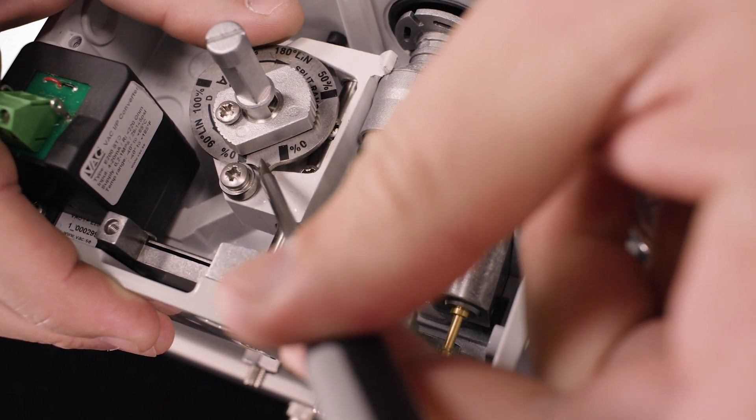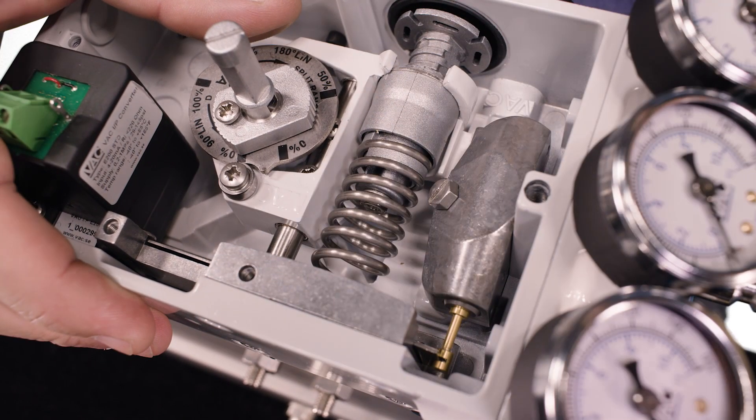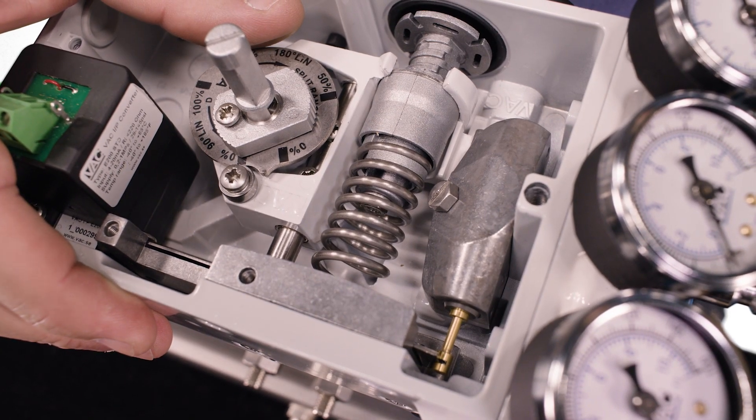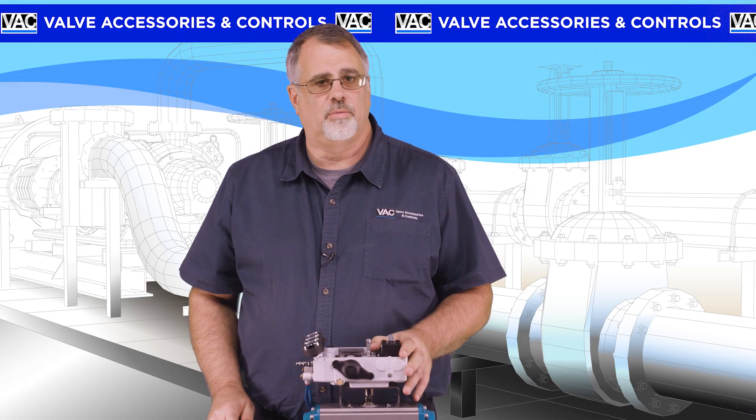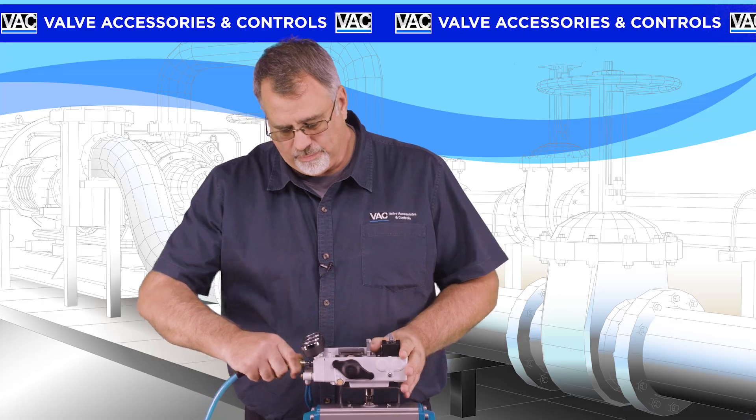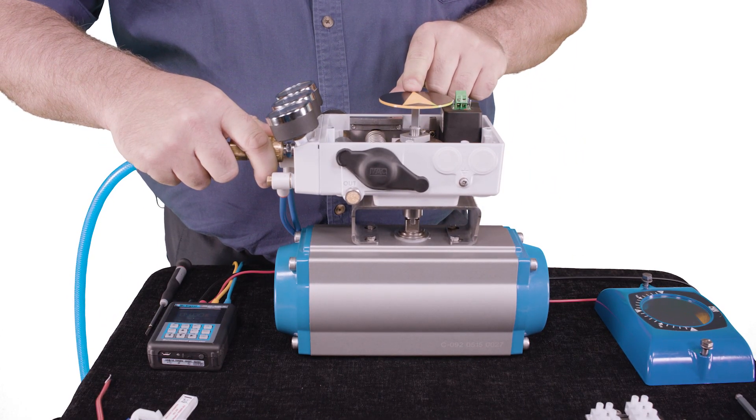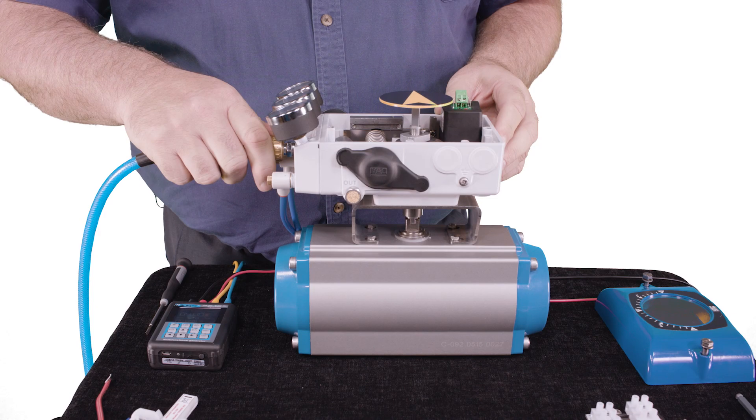If there is a small gap between the tip of the cam and the bearing, then the cam is set correctly. Now we can apply air to the positioner's supply port. If the positioner is tubed correctly, the valve will not move when the air is applied. A final confirmation that the mounting is mechanically and pneumatically correct: